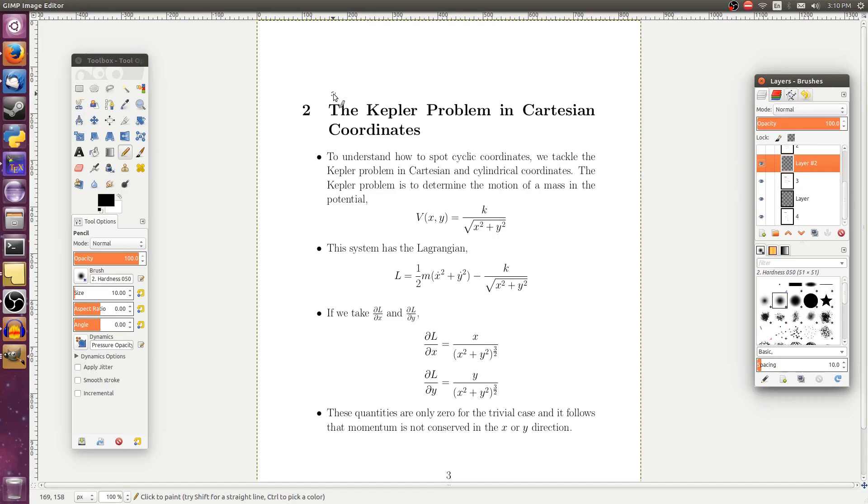So the Kepler problem is the problem of moving in a 1/r² gravitational force. So that corresponds to a 1/r potential. But r is, of course, the square root of x² + y². So we've got a potential of x and y that's equal to some proportionality constant k over √(x² + y²).